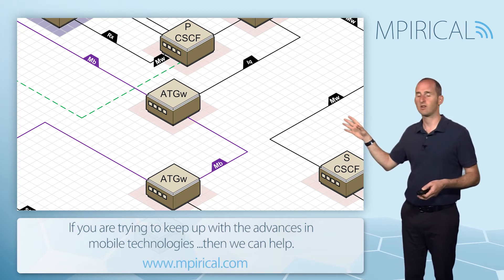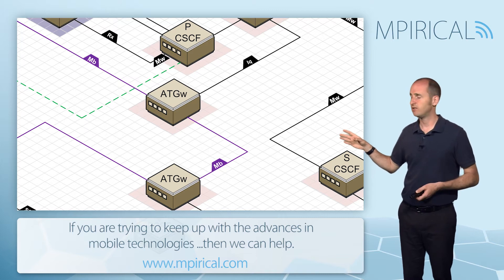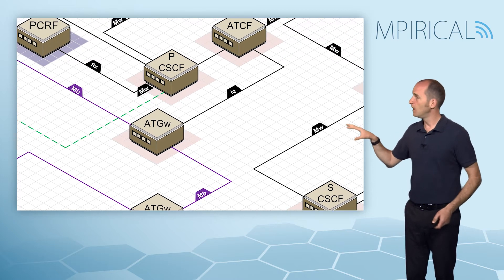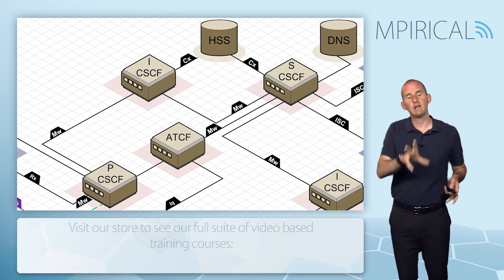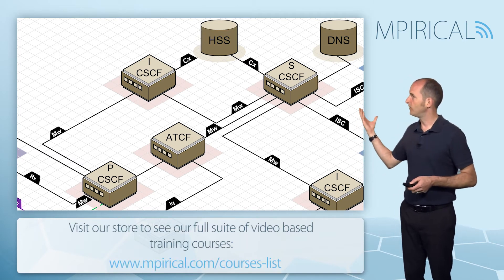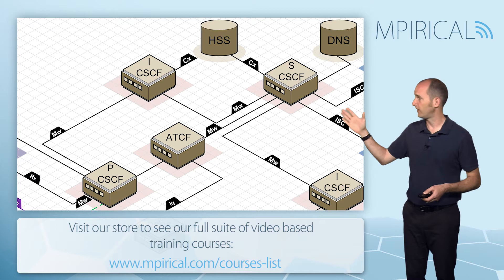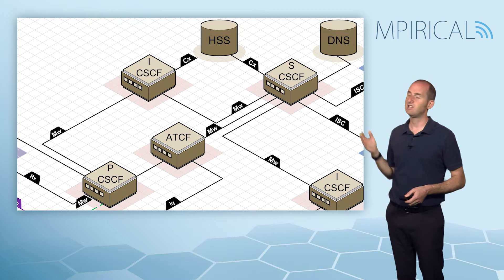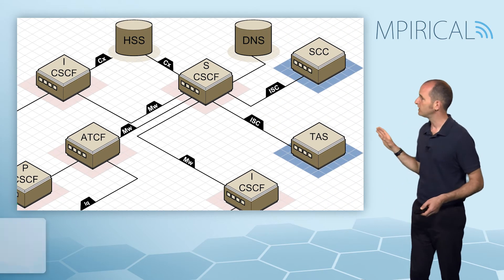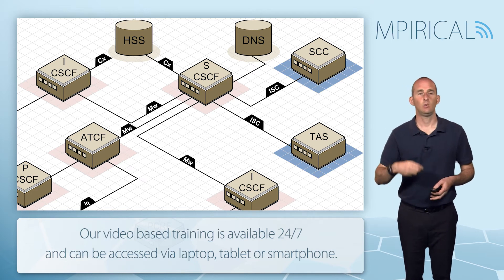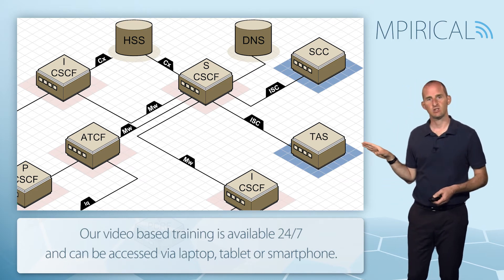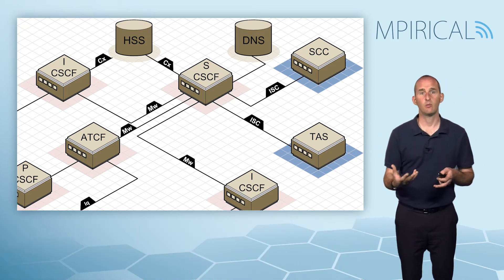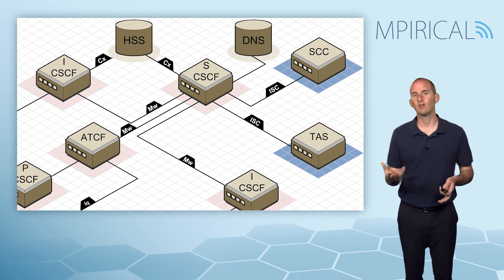The user plane runs from mobile to access transfer gateway, then between access transfer gateways, and then from access transfer gateway to the called party. Moving into the IMS, we see the main elements: the interrogating call session control function on the left and the serving call session control function on the right. You can also see the HSS involved, and crucially we need our application servers — a TAS and an SCC application server. These elements all comprise the calling party leg of the call.